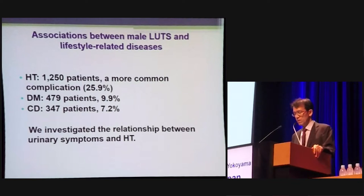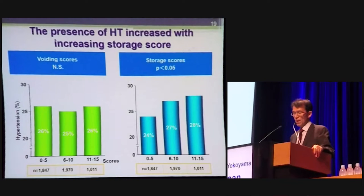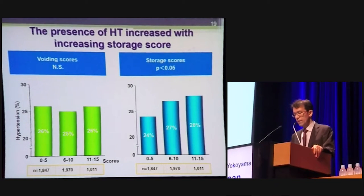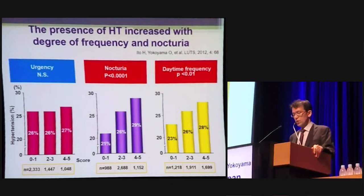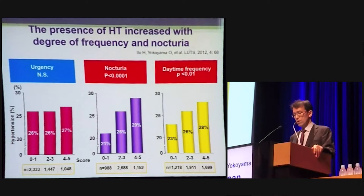We next investigated the relationship between urinary symptoms and hypertension. The presence of hypertension increased with increasing storage symptom scores, while there were no significant differences among voiding scores. Among storage symptoms, the presence of hypertension increased significantly with the degree of frequency and nocturia, but did not increase with the degree of urgency.